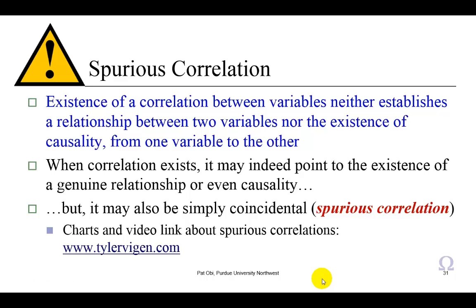With that said, I make a note about what's called spurious correlation here. I note here that the existence of a correlation between variables neither establishes a relationship, which is what regression analysis does, nor the existence of causality from one variable to the other. When correlation exists, it may indeed point to the existence of a genuine relationship or even causality, but it may also be simply coincidental. A case of spurious correlation.